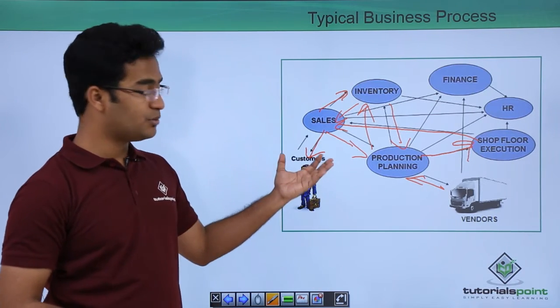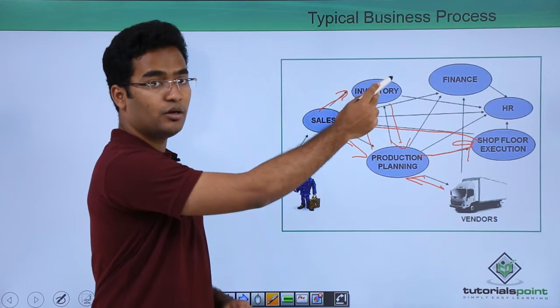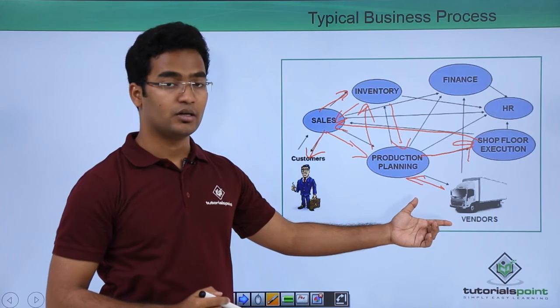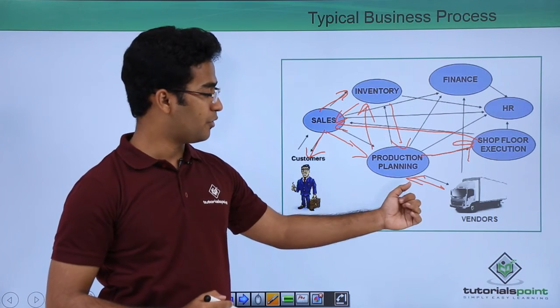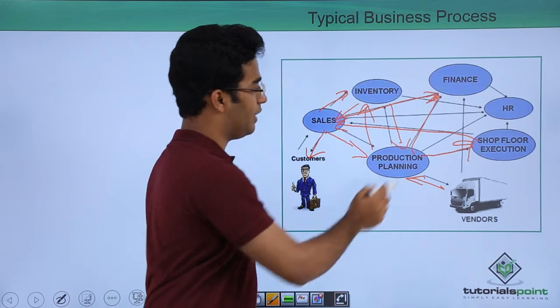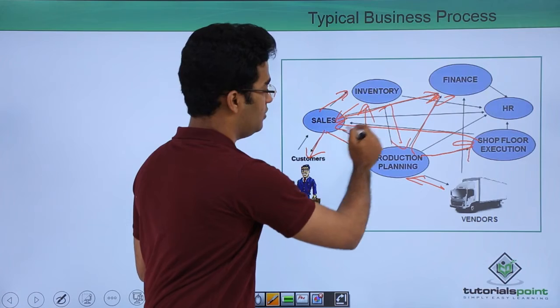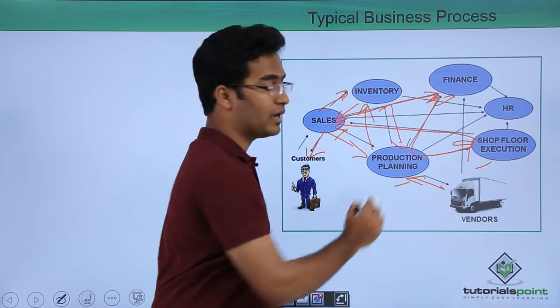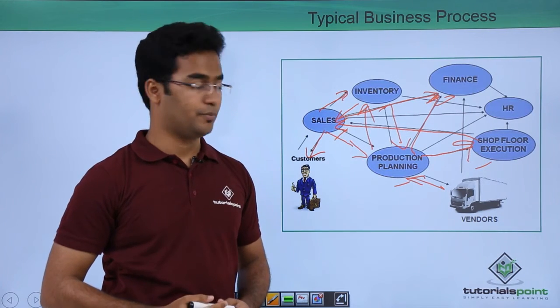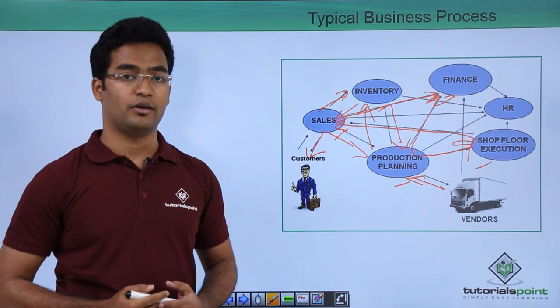There must be some revenue generated. That revenue generated is reported to the finance department. Moreover, some cost might have been incurred to buy that particular product. That is also updated to the finance department, and at last all these departments are reporting back to the HR department for the resource related issues. This is how a typical business process model is followed.